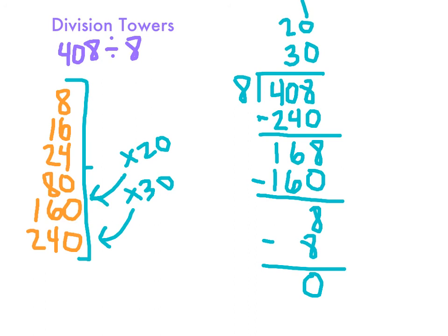To figure out our final quotient or final answer to our division problem, I'm going to add my tower up here. So 30 plus 20 plus 1, and I should get 51 as my solution. So 408 divided by 8 gives you the answer of 51.